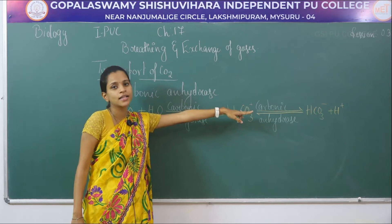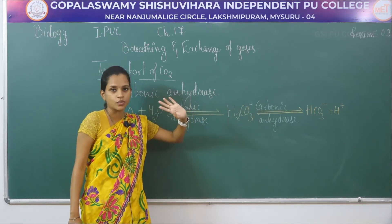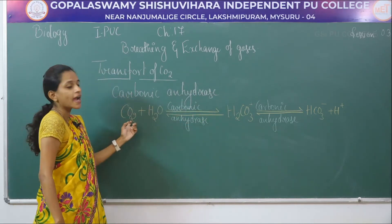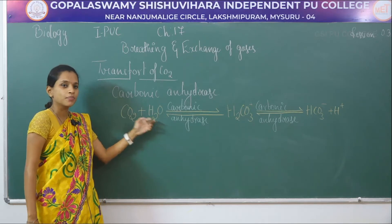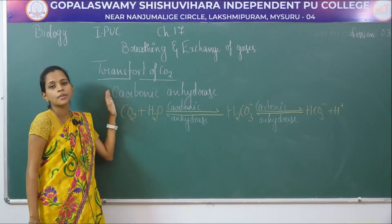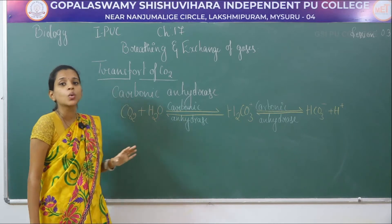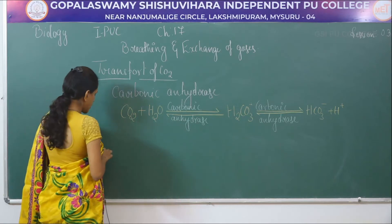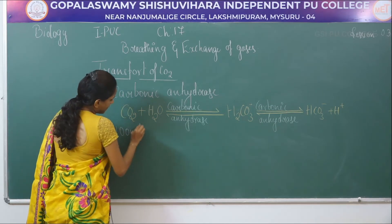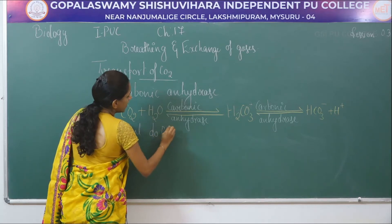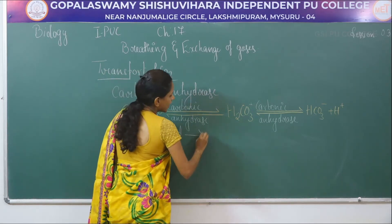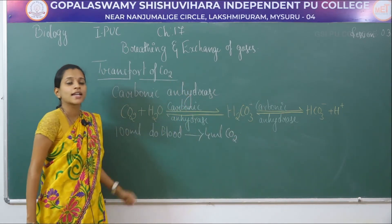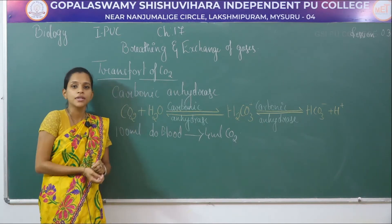When near the cells, the reaction proceeds forward, forming bicarbonates. When near the alveoli and dissociation is needed, the reverse reaction takes place and water and carbon dioxide are separated. In total, 100 ml of deoxygenated blood can give about 4 ml of carbon dioxide. That is how carbon dioxide transportation takes place within the body.